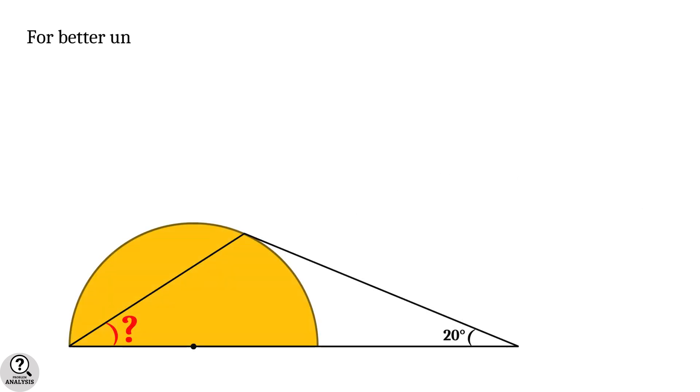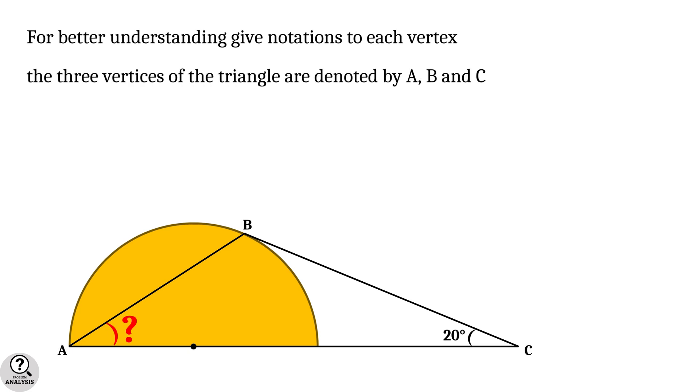For better understanding, let's give some notations to each vertex. The three vertices of the triangle are denoted by A, B and C. The center of the semicircle is denoted by O, and the remaining vertex is denoted by D.